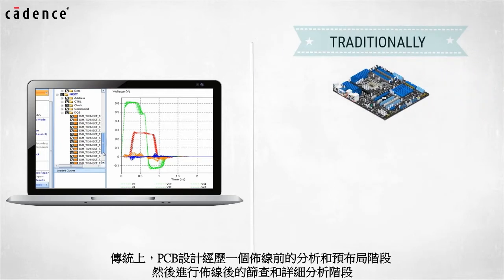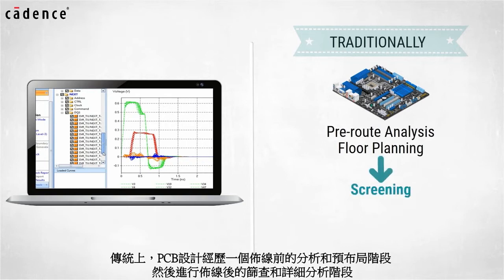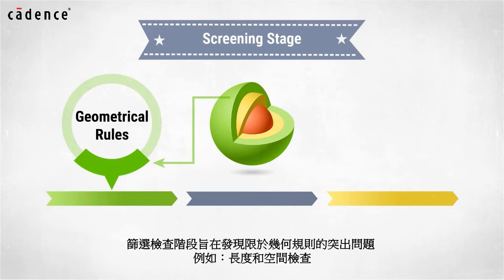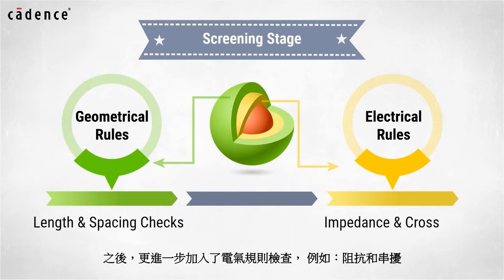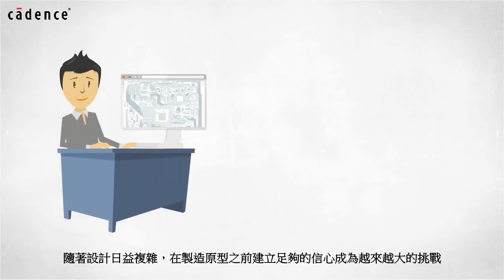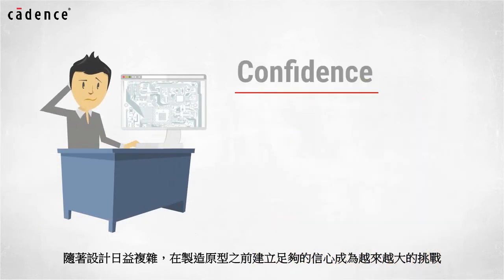Traditionally, printed circuit boards go through a pre-route analysis and floor planning stage before the design is routed, and then both a screening and a post-route detailed analysis. The screening stage is meant to catch glaring problems that used to be limited to geometrical rules such as length and spacing checks. Eventually, electrical rules such as impedance and crosstalk were added to this screening portion of the PCB design flow. With today's complex designs, establishing confidence before building a prototype is becoming a greater challenge.